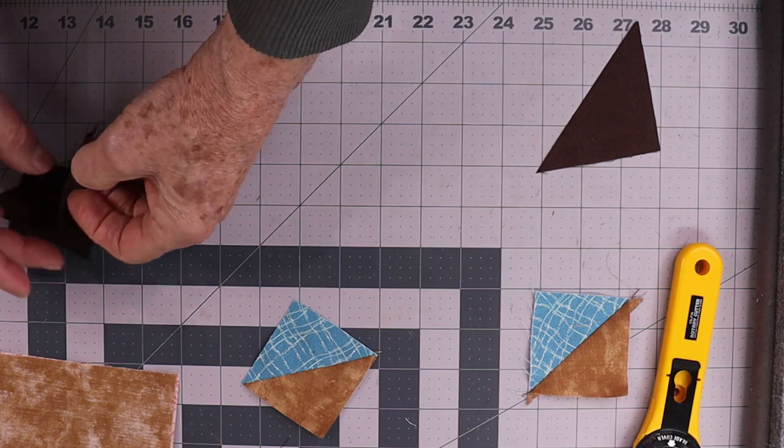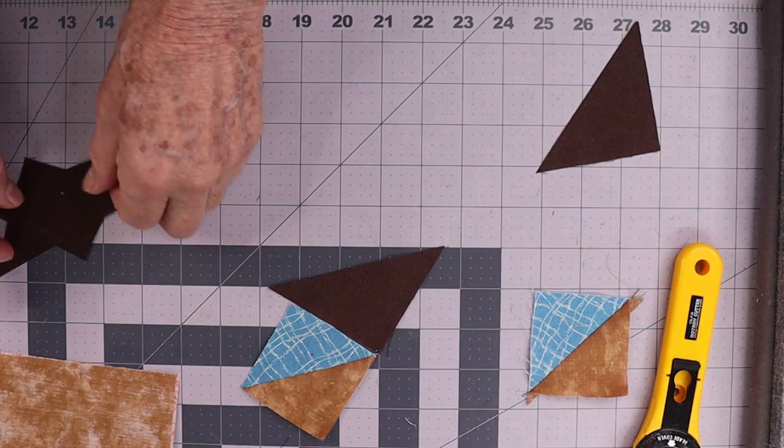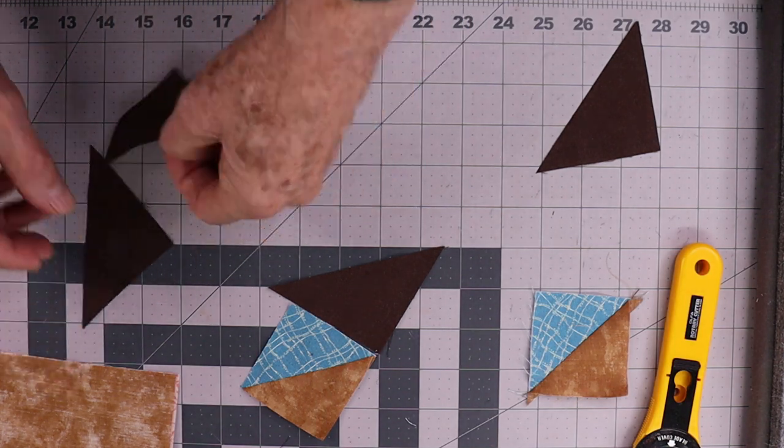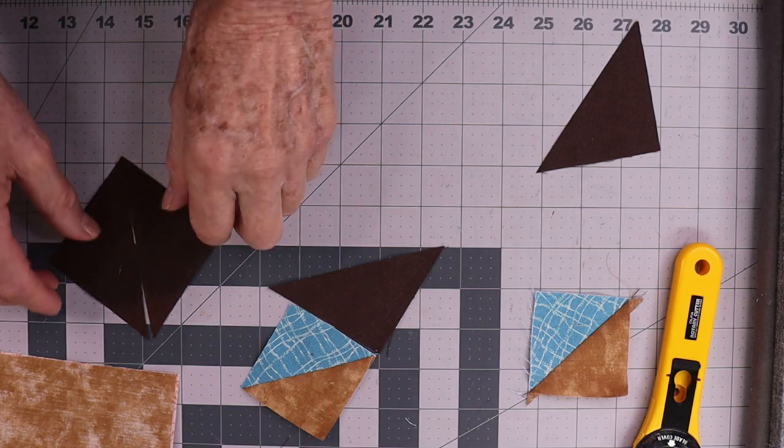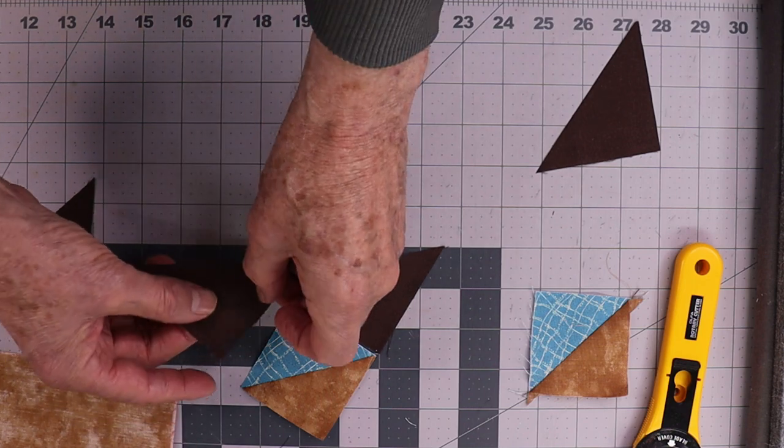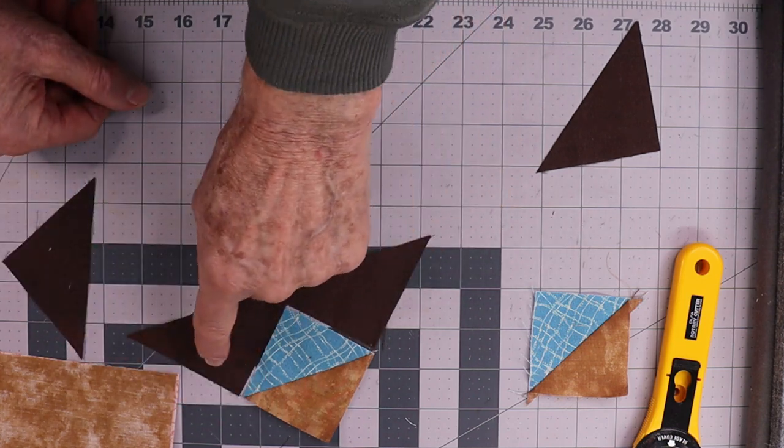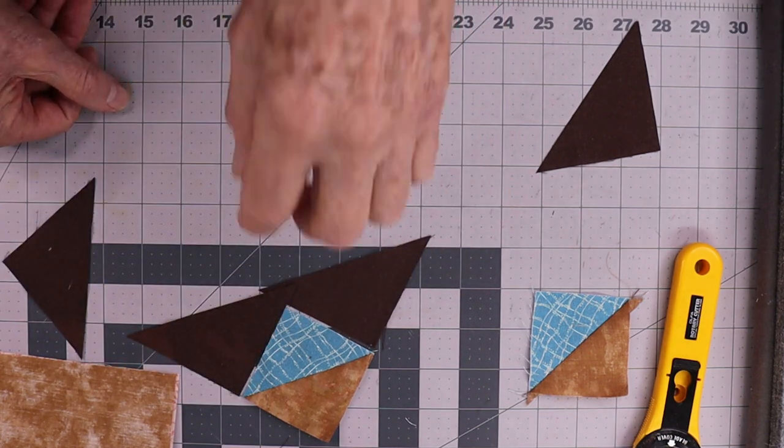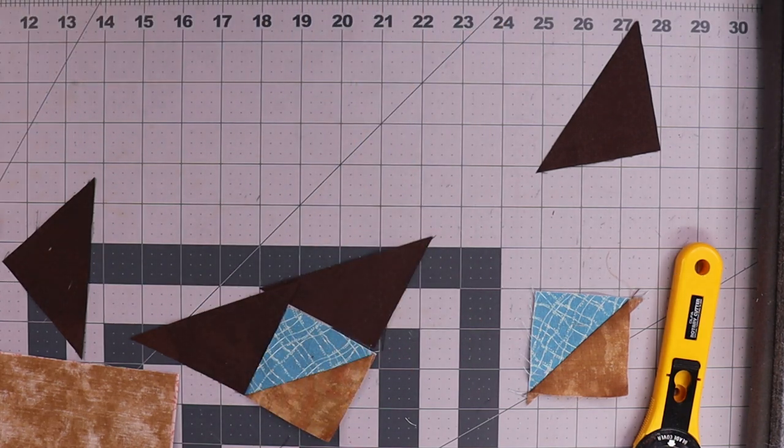Now the next piece to add to this is the brown. These are now we add this around here. We've cut the three and a quarter inch squares in half, and it goes like that. These are butt up to this like that. So I'll sew those now.